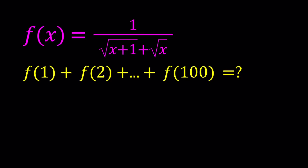Hello everyone. In this video we're going to be evaluating a radical function at several points. We have f of x equals 1 over the square root of x plus 1 plus the square root of x. We're going to find the value of f of 1 plus f of 2 plus so on and so forth all the way up to f of 100. So this is a sum, and we need to evaluate everything from 1 through 100.